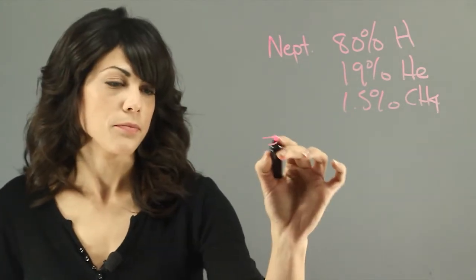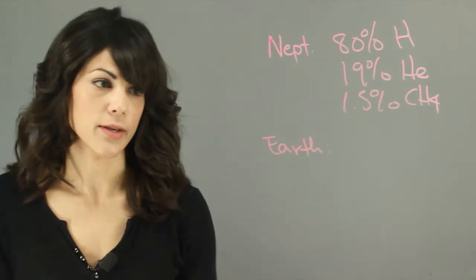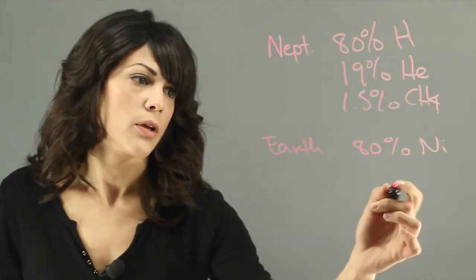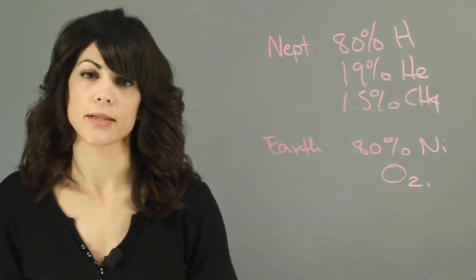Now, let's talk about Earth. Earth's atmosphere, the air that we are used to breathing, is about 80% nitrogen, and the rest of it is oxygen and carbon dioxide, etc.